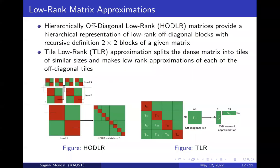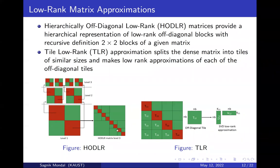We discuss how tile low rank (TLR) and hierarchical off-diagonal low rank (HODLR) approximations work. For HODLR, we split the matrix into 2×2 blocks and approximate the off-diagonal blocks by low rank approximation using singular value decomposition, then recursively split diagonal blocks until a predetermined minimum sub-block size is reached. For TLR, we split the whole matrix into tiles of equal predetermined sizes and apply low rank approximations. Red blocks are dense and green blocks are low rank approximated.